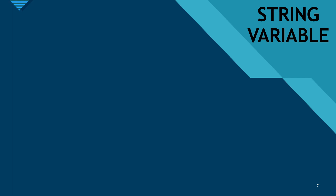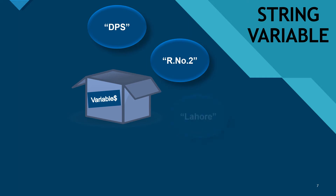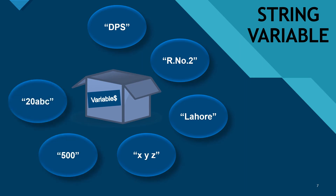A string variable is a container which contains only strings — anything written in double quotes. To differentiate between string and numeric variables: string variables will have a dollar sign at the end of the variable name. You can store anything in double quotes — decimal points, mixed capital and small case letters, spaces, just numbers, a mixture of numbers and alphabets, or any special character — as long as it is within double quotes.